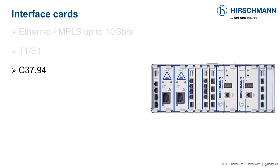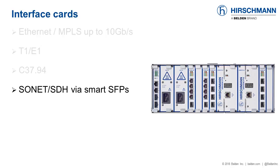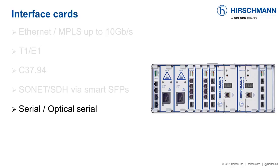C37.94 is a standard for transmitting multiple 64 kilobits per second channels on an optical fiber — a protocol used in the power industry between teleprotection equipment and multiplexer equipment. Smart SFPs enable transparent transportation of synchronous digital bitstreams from a SONET or SDH network. If you are planning to migrate your existing SONET or SDH network to a new MPLS-TP network, these SFPs provide a seamless transition method. Interface cards are also available to bridge serial links across the MPLS-TP backbone, supporting protocols including RS-232, RS-422, RS-485, X.21, and V.35 as well as optical low-speed serial.